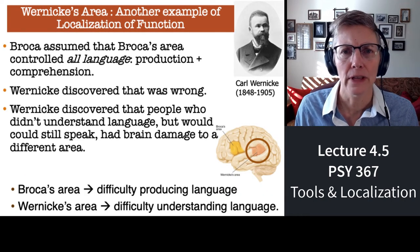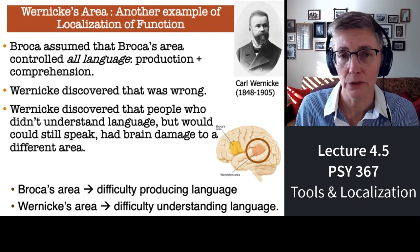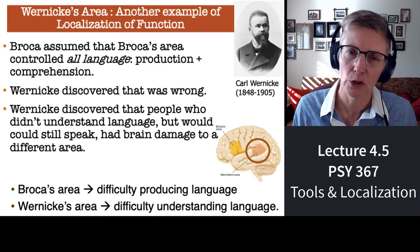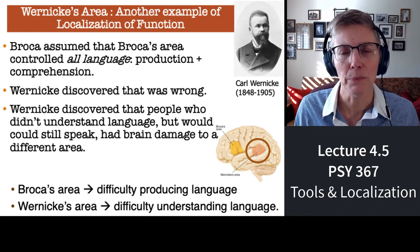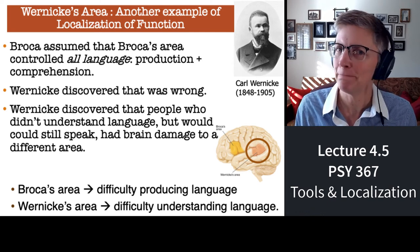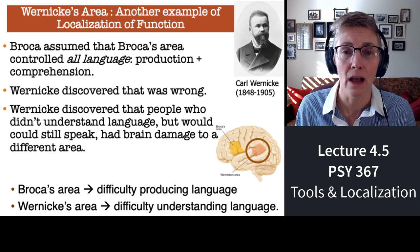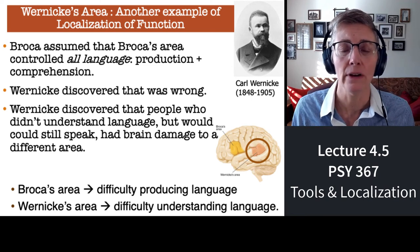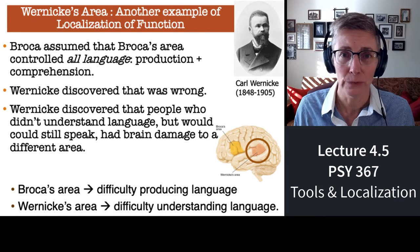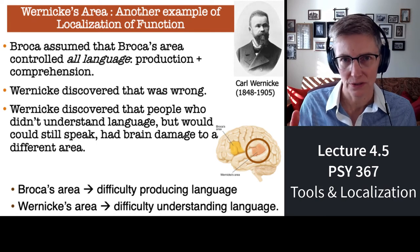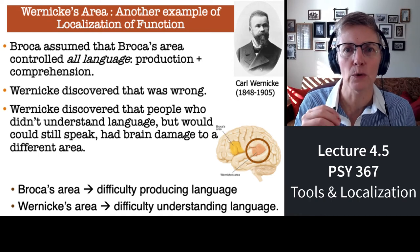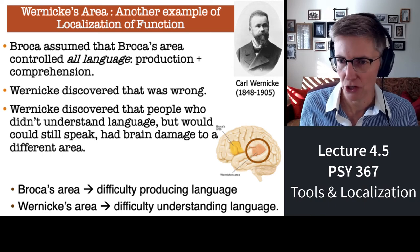A few years later, Wernicke found a different patient whose brain damage was in the temporal lobe rather than the frontal lobe. That person had no trouble speaking but had trouble understanding language. So Wernicke was able to say Broca got it wrong — all of language is not localized in Broca's area. It turns out that different aspects of language are localized in different areas: Broca's area in the frontal lobe is involved in the production of language, while Wernicke's area is involved in the comprehension of language.